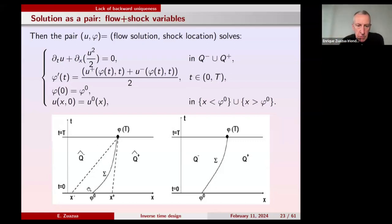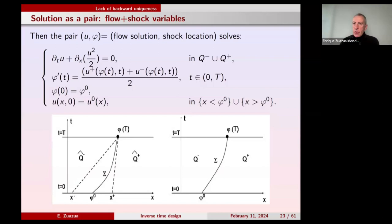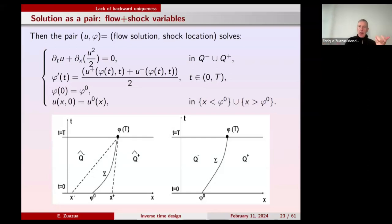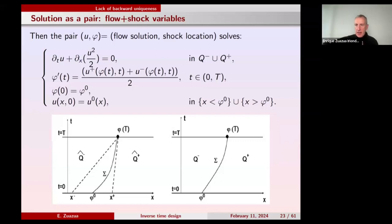One of the fundamental observations is that solutions constituted by two smooth arcs — u⁻ and u⁺ to the left and right — must fulfill the Rankine-Hugoniot conditions. Rankine and Hugoniot were two French physicists who studied shock propagation by doing experiments using large tubes: one would produce an explosion at one end and the other would measure the time for the wave to reach the other end. Experimentally, they observed that if φ(t) is the location of the shock, it propagates with a velocity equal to the average value of u⁺ and u⁻.